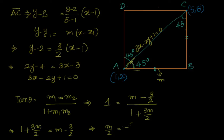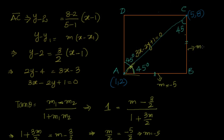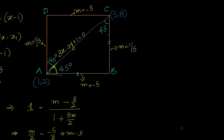Simplifying: 1 + 3M/2 = M − 3/2, which gives M/2 = −5/2, so M = −5. We got the slope of AB: M = −5. Therefore, the slope of the perpendicular lines AD and BC is 1/5, and the slope of the parallel line CD is also −5.